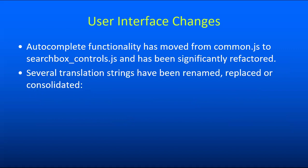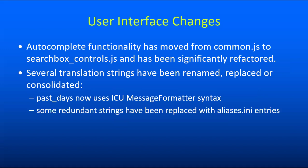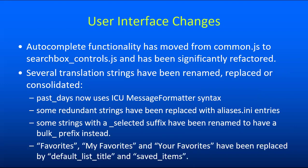We've also renamed, replaced, and consolidated some translation strings. For example, the 'past days' string now uses the ICU message format syntax. There were some redundant strings that have been replaced with entries in aliases.ini to reduce duplication. There were some strings with an 'underscore selected' suffix that have been renamed to instead have a 'bulk' prefix to get all bulk-related text grouped together. And we did some work to normalize and clarify the language around favorites — strings called 'favorites', 'my favorites', and 'your favorites' have all been replaced with 'default list title' and 'saved items'.